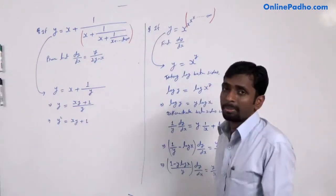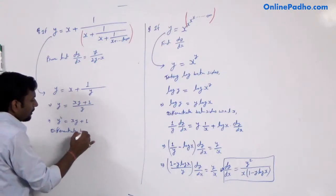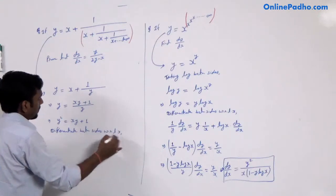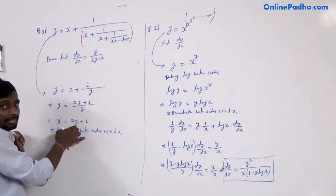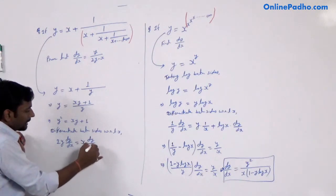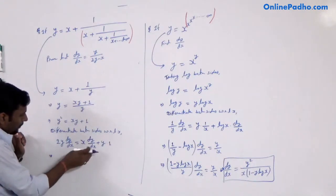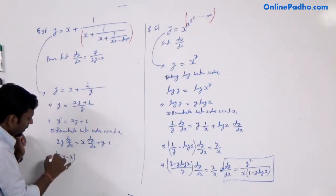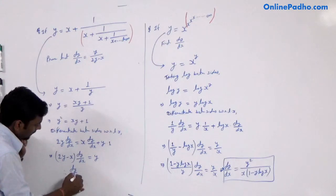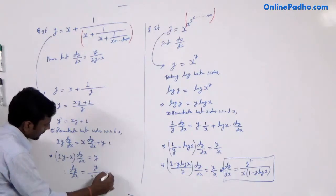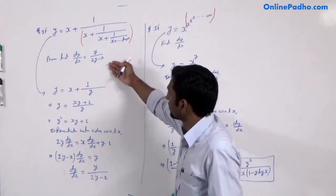Now we differentiate both sides with respect to x. We get 2y · dy/dx equal to — applying the product rule to xy — x · dy/dx plus y · 1, plus 0 (derivative of constant 1). Collecting dy/dx on the left: (2y − x) · dy/dx equals y. Therefore, dy/dx equals y divided by (2y − x). This is the value of dy/dx — proved.